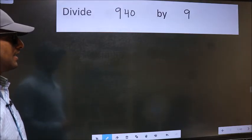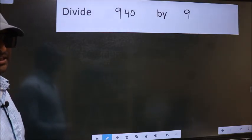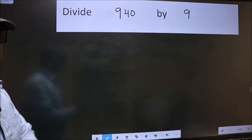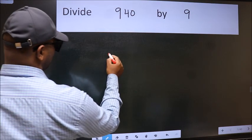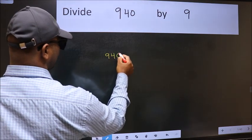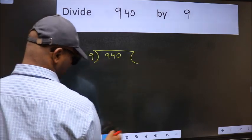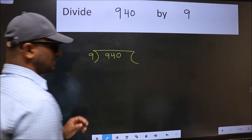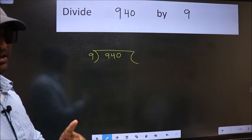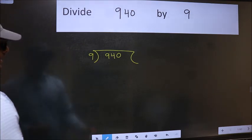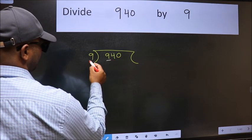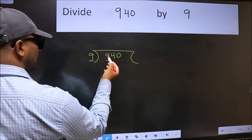Divide 940 by 9. To do this division, we should frame it in this way: 940 here and 9 here. This is your step 1. Next, here we have 9 and here 9. When do we get 9 in the 9 table?